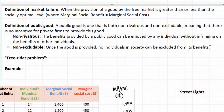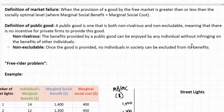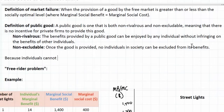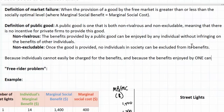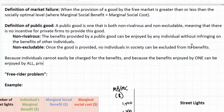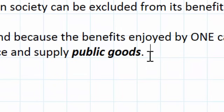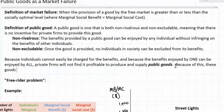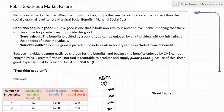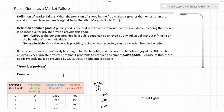So to recap, our definition of a public good is one that is both non-rivalrous and non-excludable. Because individuals cannot easily be charged for the benefits, and because the benefits enjoyed by one can be enjoyed by all, private firms will not find it profitable to produce and supply public goods. This is of course why they are called public goods — because these goods will simply not be provided by the free market, i.e. the private sector, and so the public sector is left to provide them.